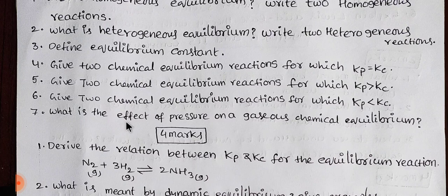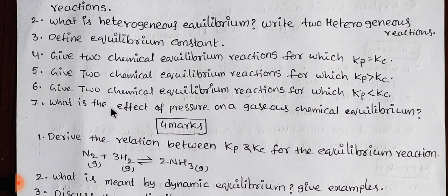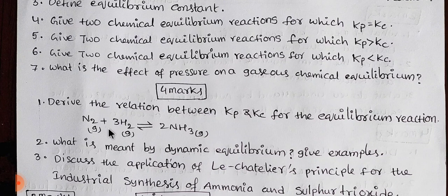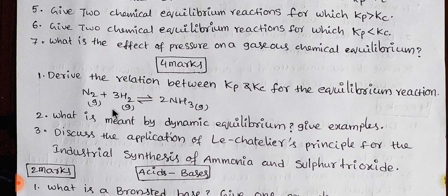What is the effect of pressure on a gas's chemical equilibrium? So we are doing 7 two-mark questions. Next we have 4-mark questions. In general, we have Le Chatelier's principle. The first example is Haber's process — ammonia and sulfur trioxide preparation. For example, Kc and Kp: N2 + 3H2 → 2NH3.